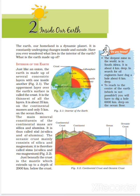What is the earth made up of? First of all, we will discuss the interior of the earth. What is inside an onion? The earth is made up of several concentric layers, one inside another. The uppermost layer of the earth's surface is called the crust.